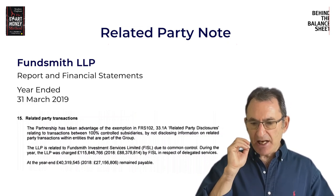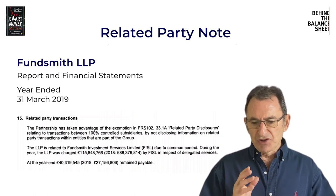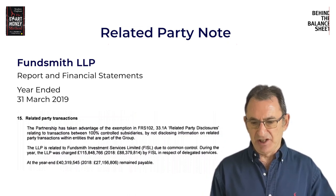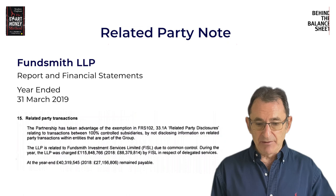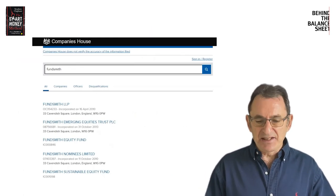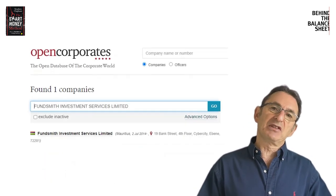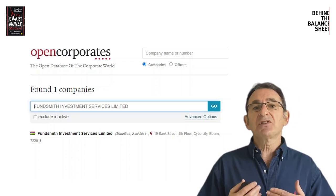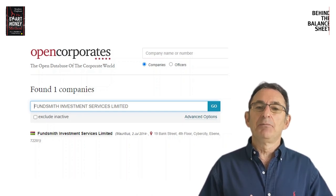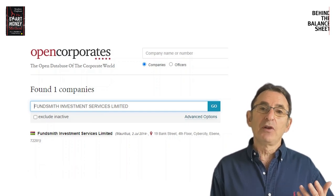Note 15 tells you that an entity known as Fundsmith Investment Services Limited was charged 116 million pounds last year. That's quite serious money. When you look in Companies House, that entity doesn't exist. But if you dig deeper, you actually find that Fundsmith Investment Services Limited is incorporated in Mauritius — and that's where Terry Smith now lives. Quite nice, isn't it? The idea of living on a beautiful island with nice weather, certainly nicer weather than London, and probably COVID free.